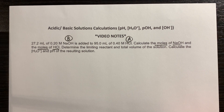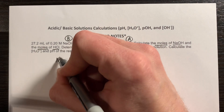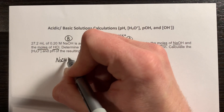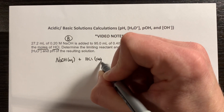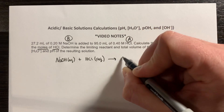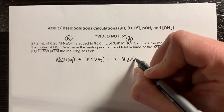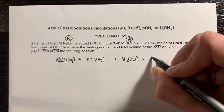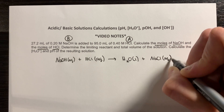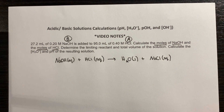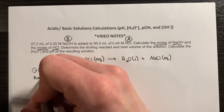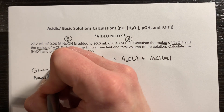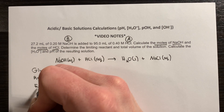Let's start by writing out our equation. So I have sodium hydroxide, aqueous, reacting with hydrochloric acid, also aqueous. That's going to form liquid water and a salt — in this case, sodium chloride, which readily dissolves in water. I'm going to set this up with stoichiometry in mind, having my given number of moles, the number of moles that react, and the moles that are ultimately in excess.